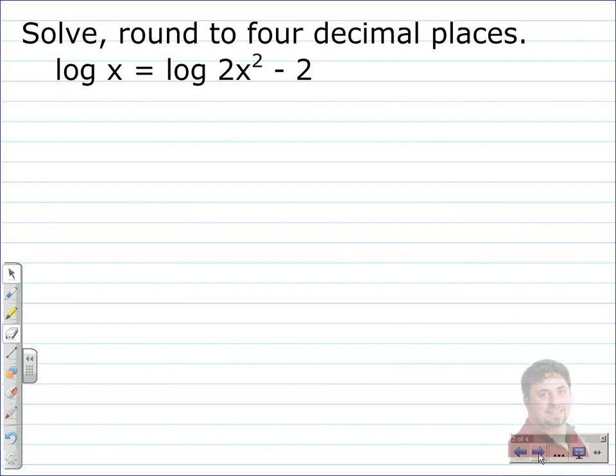The first example we're going to do today is to solve the equation round to four decimal places. That comes to play at the end. We have the log of x is equal to the log of 2x squared minus 2. Notice the minus 2, there's no parentheses around the minus 2 and the 2x squared, so the logarithm is only being applied to the 2x squared.